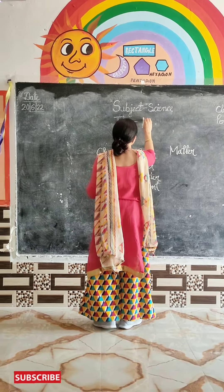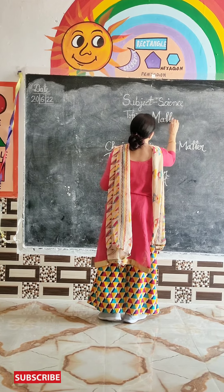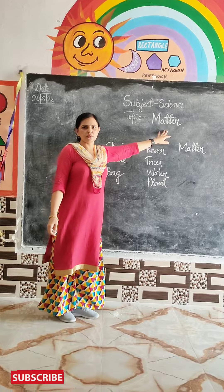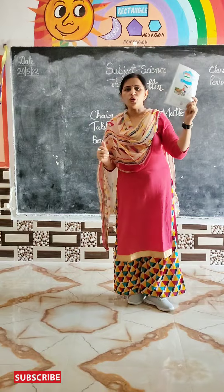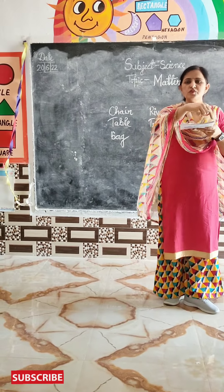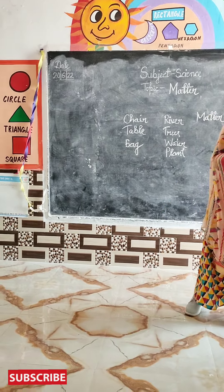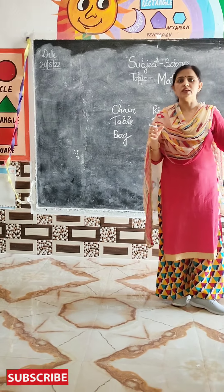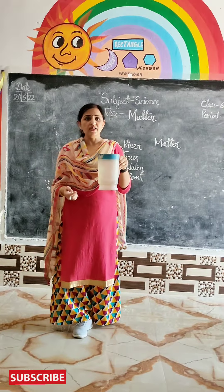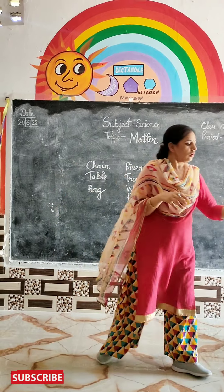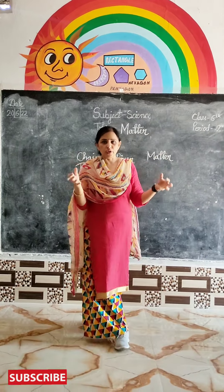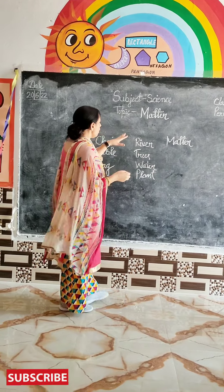Today we will know what is matter. Anything that has weight and occupies space is called matter. For example, what is this in my hand — a book? If you put this book on the table, it will take some space. For example, this water jug. If you put this jug on the table, it will take some space, and it has weight also.